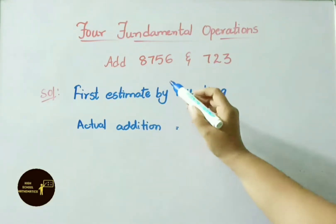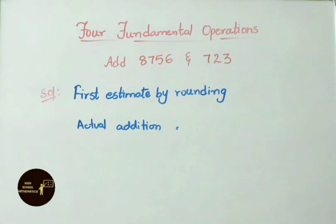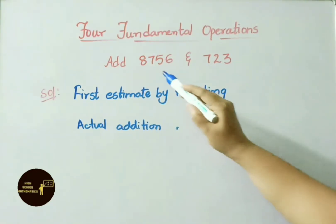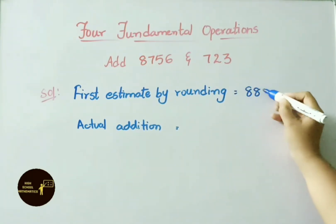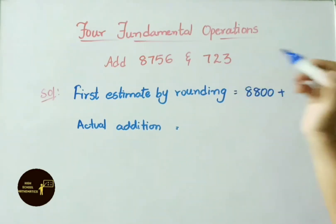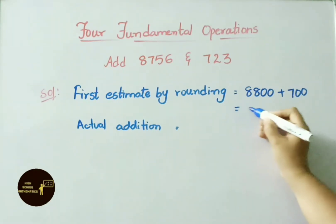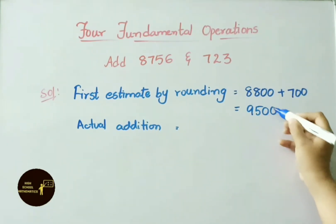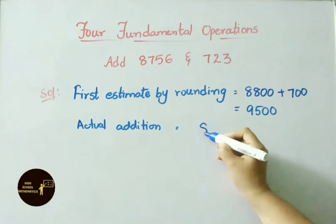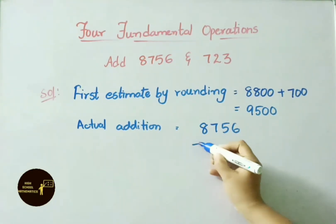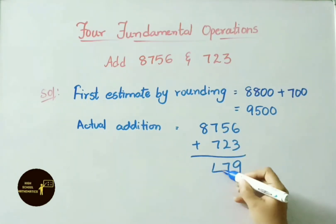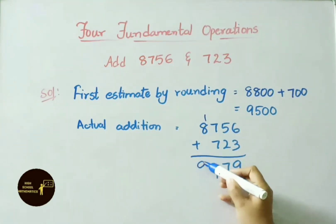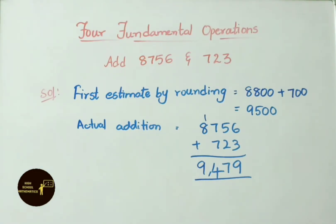Another addition example: 8,756 and 723. Estimate using nearest hundreds: 8,756 rounds to 8,800, and 723 rounds to 700. Adding both gives 9,500. Actual addition: 6 plus 3 is 9, 5 plus 2 is 7, 7 plus 7 is 14 — write 4 carry 1, 1 plus 8 is 9. Actual answer is 9,479, and our estimation value is 9,500, which are closer.